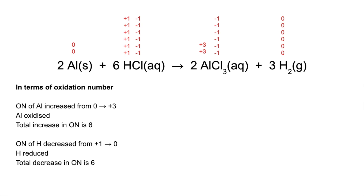The total decrease in oxidation number is six, which matches the increase of six, because we've got six moles of hydrogen in six HCls — each of those plus ones decreased down to zero, giving six zeros across three moles of H2. In terms of electrons, the two moles of aluminium each changed into an Al3+ ion by losing three electrons, as shown in the half equation. The aluminium has lost electrons, so it's oxidation.